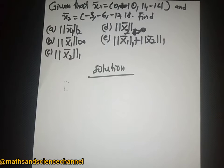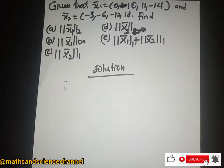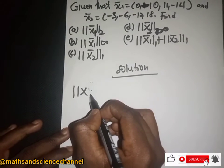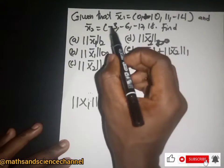Welcome once again. In this section we are looking at vector norms. We are given x1 equal to (0, -10, 11, -14) and x2 equal to (-3, -6, -12, 18). The first question says we should find the 2-norm of x1.